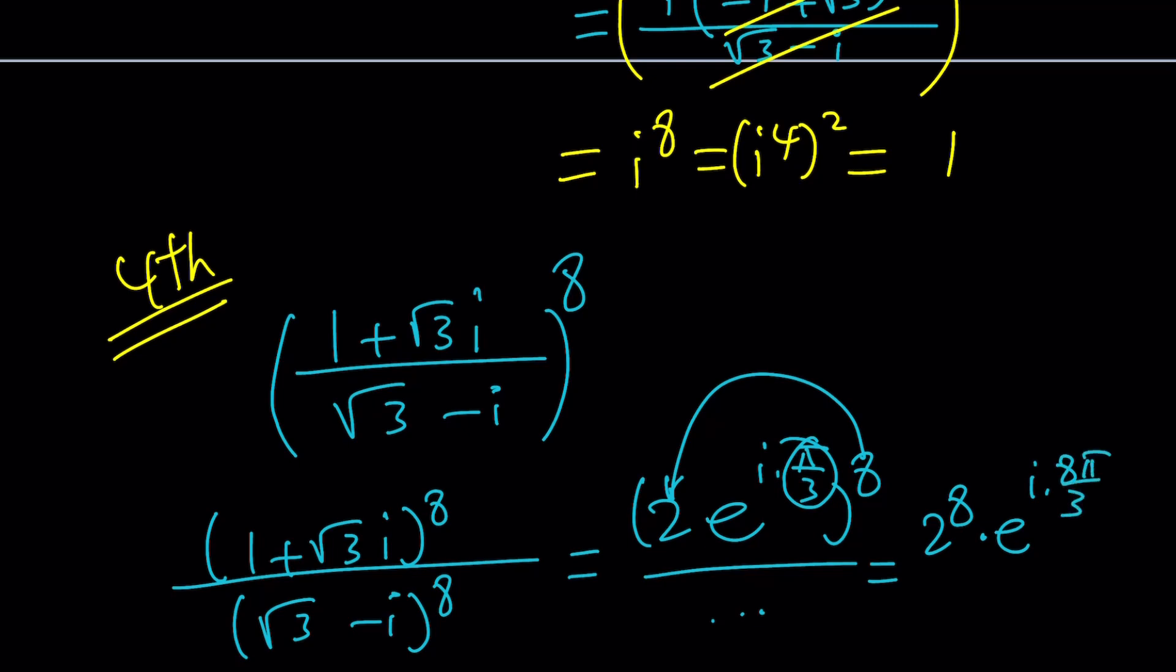But of course, 8π/3 is greater than 2π. So you can take out multiples of 2π. 8π/3, if you subtract 6π/3 from it, you're going to end up with 2π/3. So that's going to be the principal value. And then you can just plug it in and find the value and something similar for the bottom.